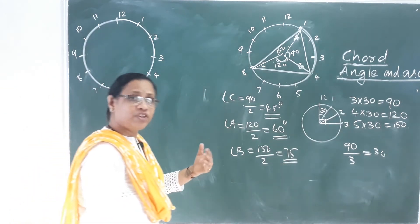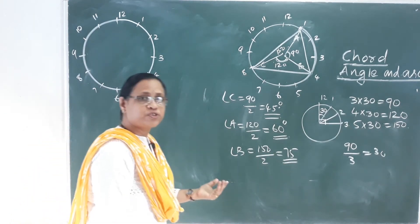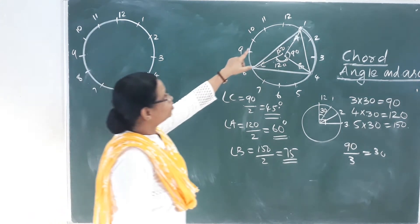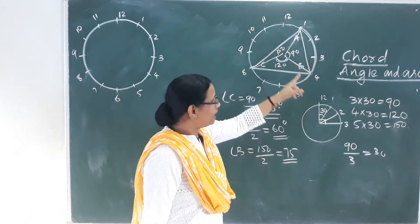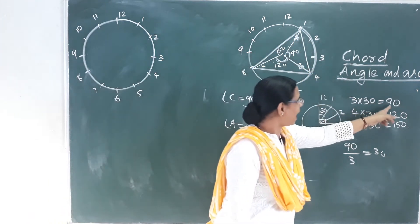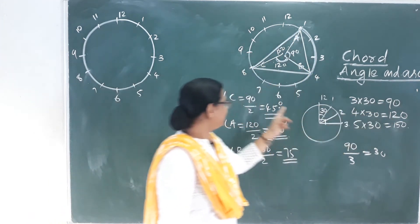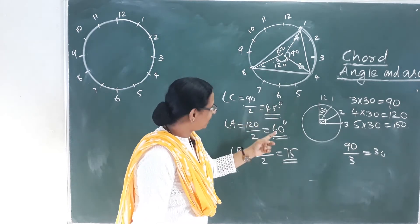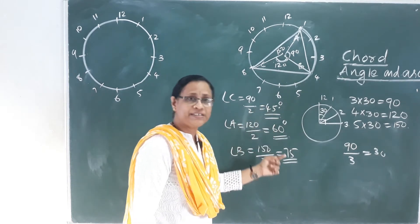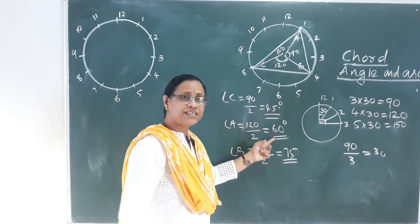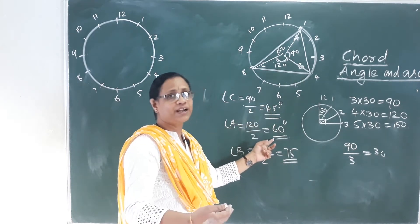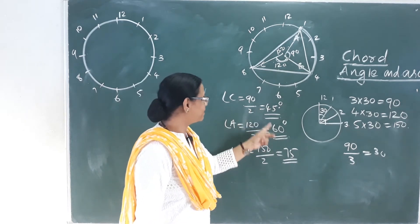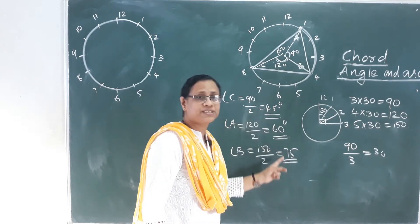That's why this is not an equilateral triangle — the angles are not all equal. The angles are 45 degrees, 60 degrees, and 75 degrees. These are all different angles. For an equilateral triangle, all angles must be 60 degrees.